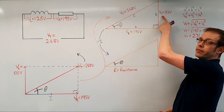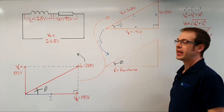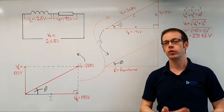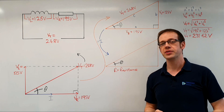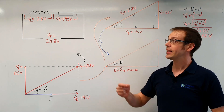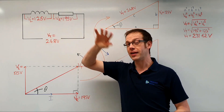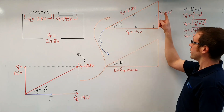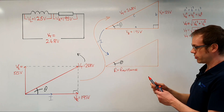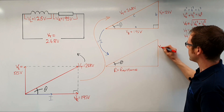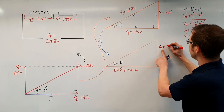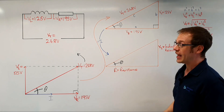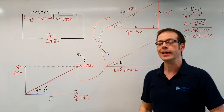What if we take the inductive voltage — the voltage across the inductor — and divide it by the current flowing through it? V divided by I still gives us a form of opposition to current flow, but in this instance it is not resistance; it is the inductive reactance of the circuit. The symbol for inductive reactance is XL — X with a subscript L. So taking VL divided by I gives us the inductive reactance XL, telling us the opposition to current flow created by the choke inside the fluorescent light fitting.